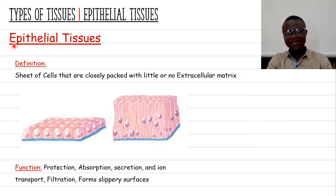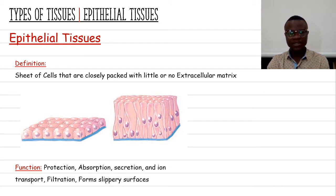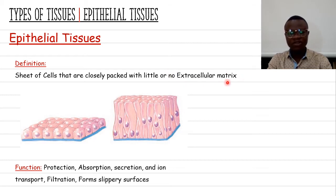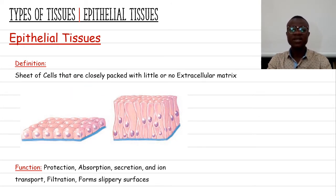What is epithelial tissue? In a simplified definition, epithelial tissue is a tissue made of a sheet of cells that are closely packed with little or no extracellular matrix. Pay attention to the term 'extracellular matrix' — we are going to see this a lot when discussing connective tissue. The image below helps us better understand this definition.